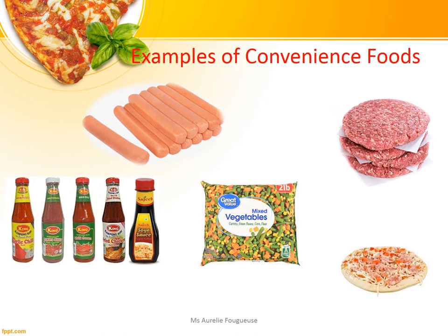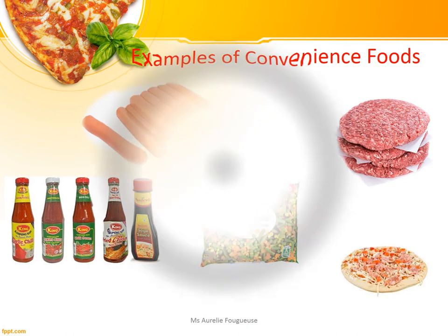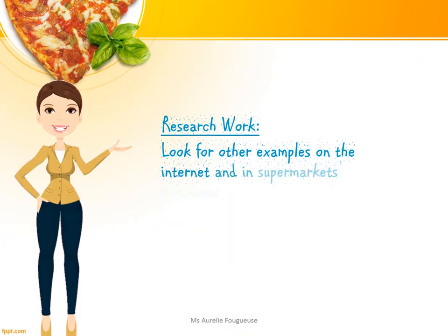Some more examples are burgers, sausages, frozen mixed vegetables, sauces including tomato ketchup, chili sauce, soya sauce, etc. And not to forget frozen pizza. If you have internet facility or brochures from a supermarket, do further research about other examples of Convenience Foods.